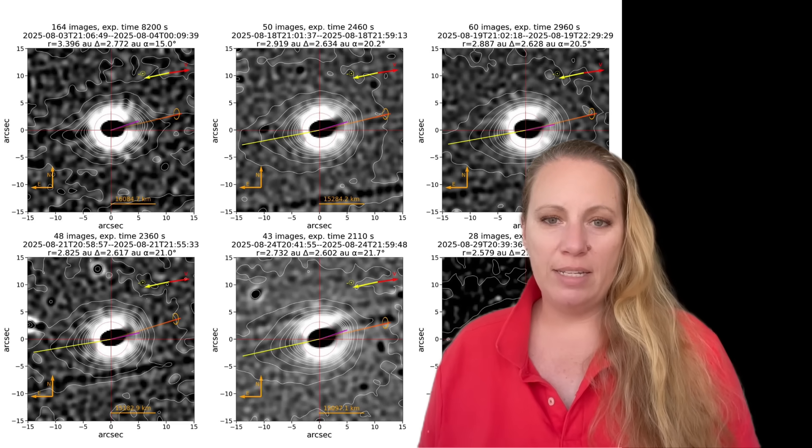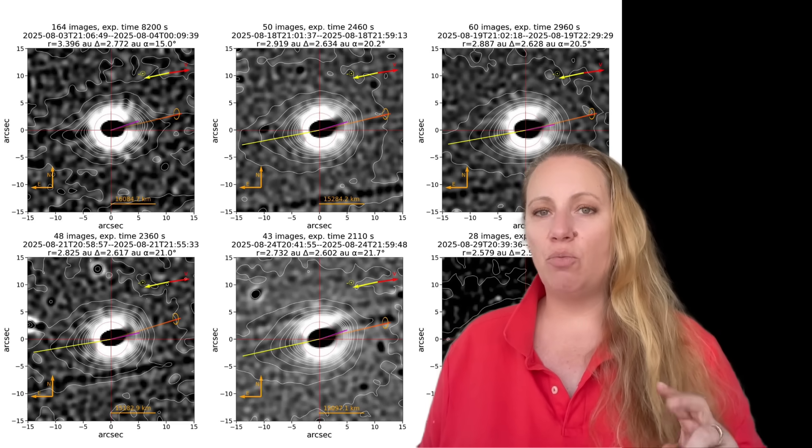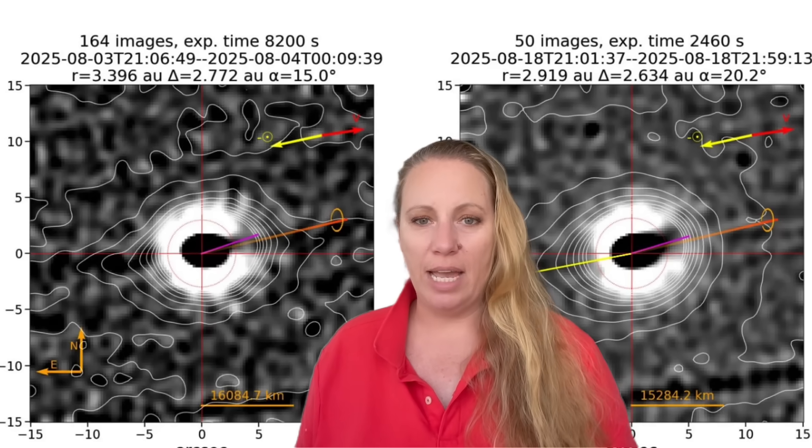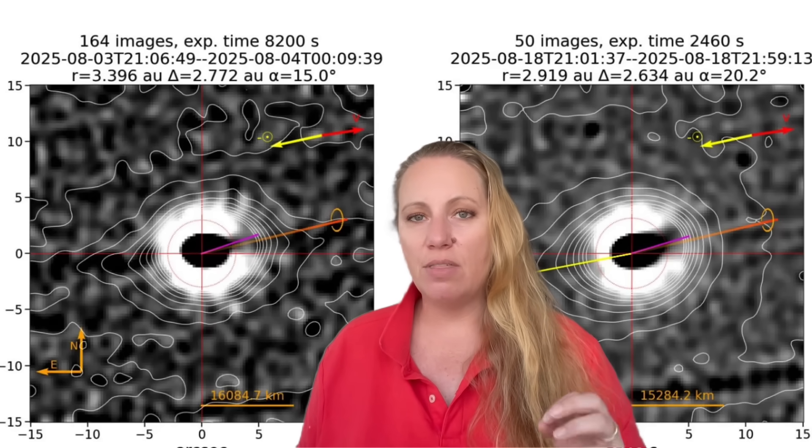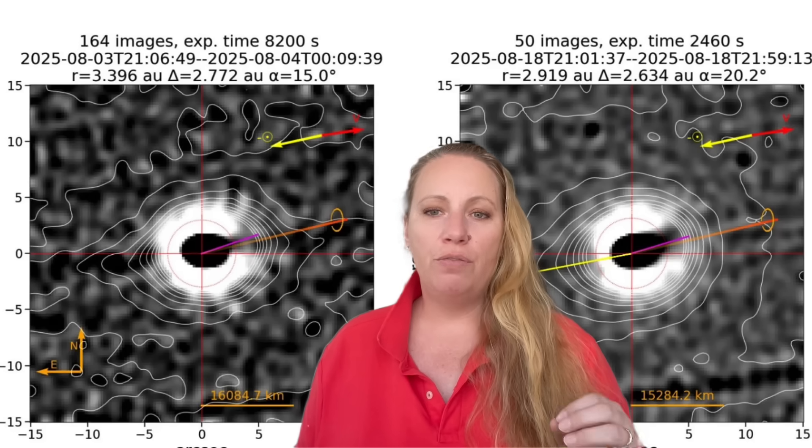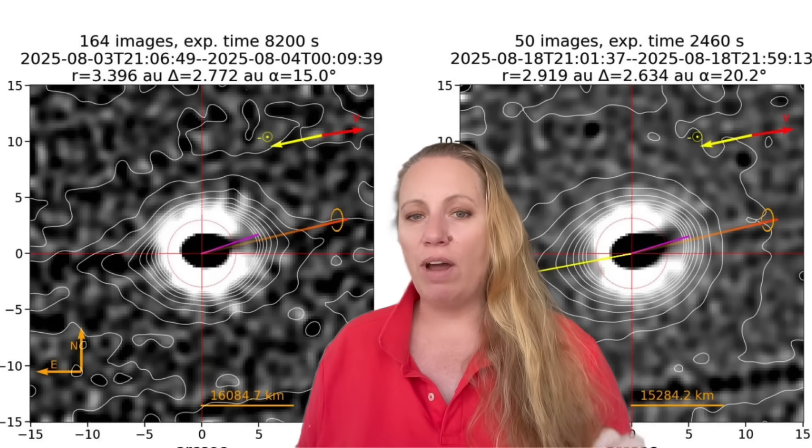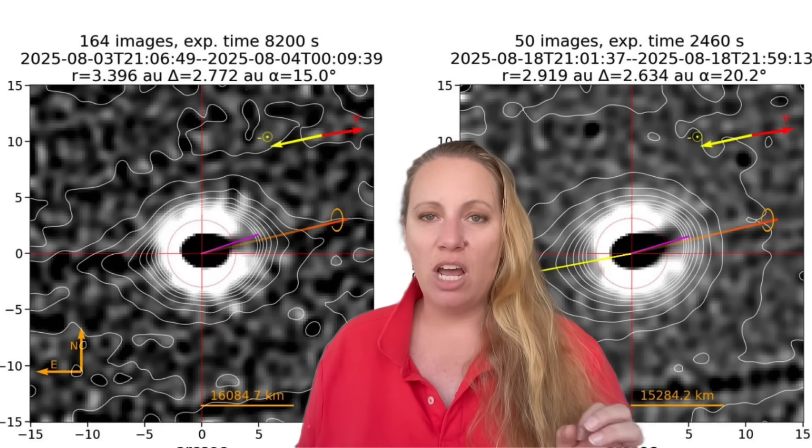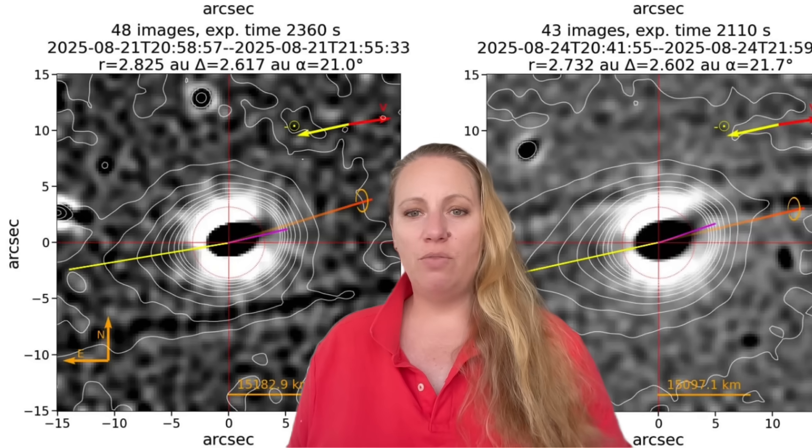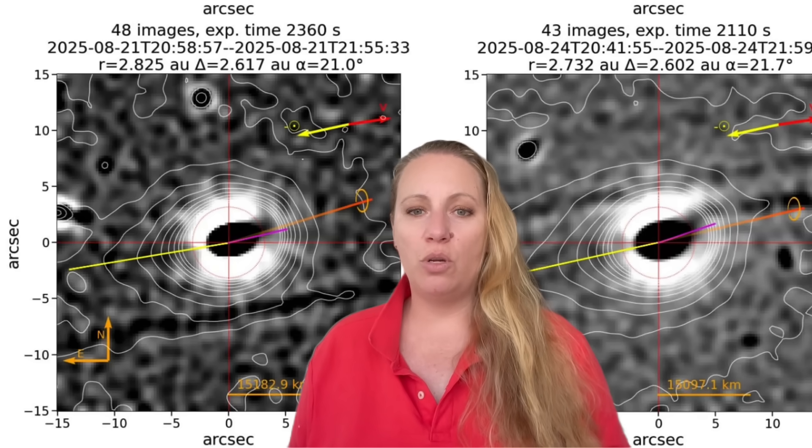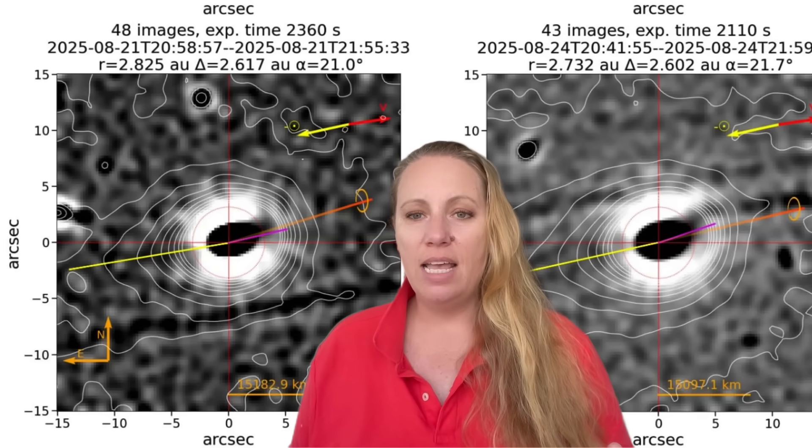Where is this measurement taken? Because this is important guys, they did not measure right at the nucleus of 3i Atlas. They measured the anti-tail at a distance of 6,000 kilometers from the brightness peak. That's what you see here in this image. That's roughly 3,700 miles from the brightness peak. So this avoids noise close to the core and it looks at the real structure of the tail.